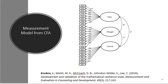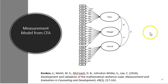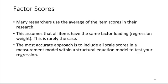Here's an example of a measurement model from a publication of mine where I studied mathematical resilience. I have three factors: value, struggle, and growth. This diagram shows the correlations between the factors and the factor loadings of the 24 items in my scale. If I were to use this in a structural equation model, I would also need some other measurement and a theory that said that value, struggle, and growth contribute to some other factor. One question I get asked a lot is how to calculate a factor score. Many researchers use the average of the items and run a straight regression, but this assumes all items have the same factor loading. The most accurate approach is to include all the item scores in a measurement model within a structural equation model to test your regression.